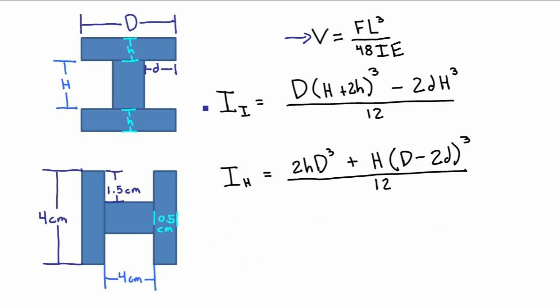We also have the equation for the moment of inertia of the I-beam in the I-orientation and the moment of inertia of the I-beam in the H-orientation. The dimensions d, h, little h, and little d are found on this figure here on the left.